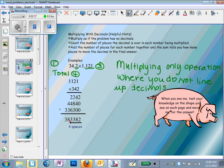So when we multiply like normal, we get 3, 8, 3, 3, 8, 2, and we're going to move our decimal over four spaces. One, two, three, four.